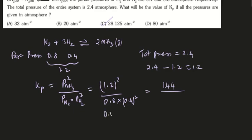We can write 0.4 into 2 as 0.8. Then 0.4 to the power 4 into 2. So 4 into 4 is 16, and 16 into 16 is 256. Working through all the values, you will get the final value of Kp equal to 28.125 atm per atm.